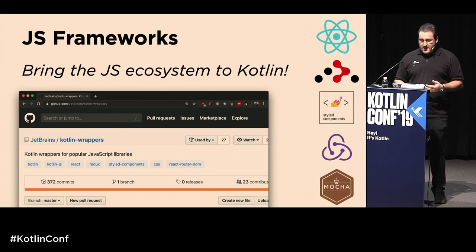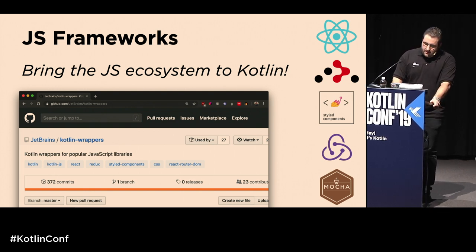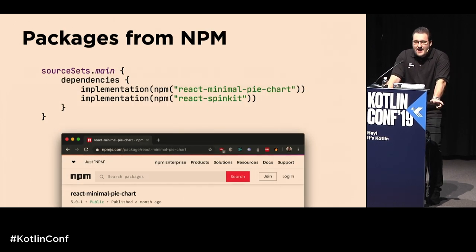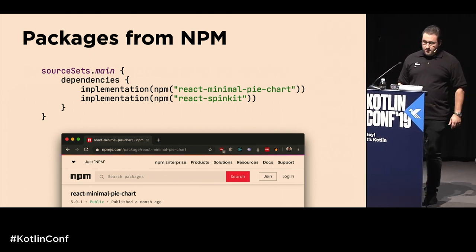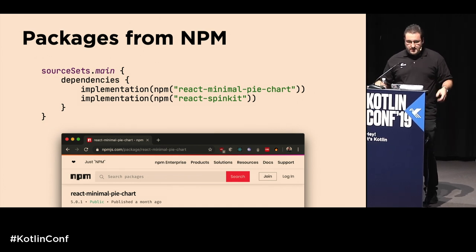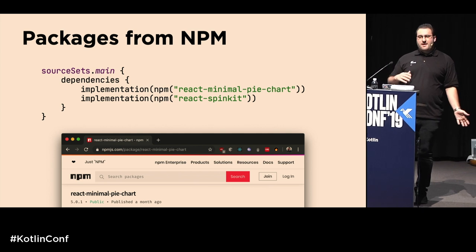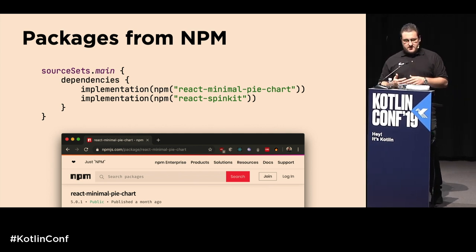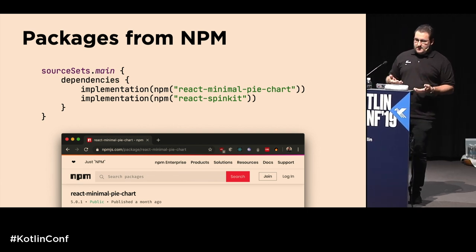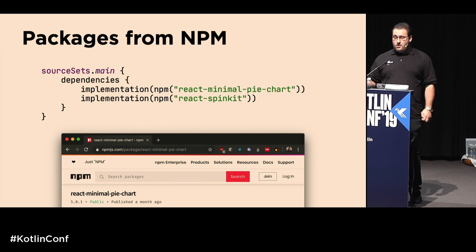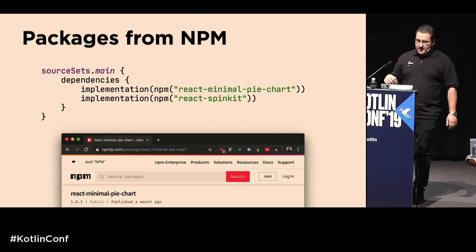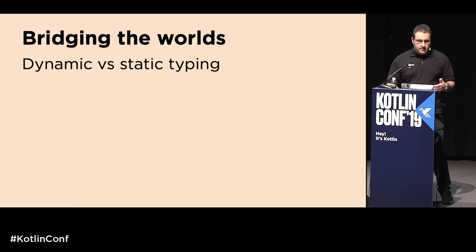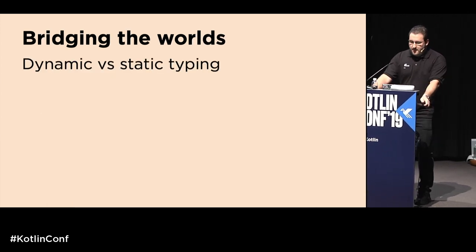When people build a React application they want to stand on the shoulders of giants and pull in other dependencies. npm dependencies can be imported the same way: in your source set dependencies, specify an npm package — for example, react-minimal-pie-chart or react-spinkit — and the magic in the background automatically updates your package.json and makes it available at build time.